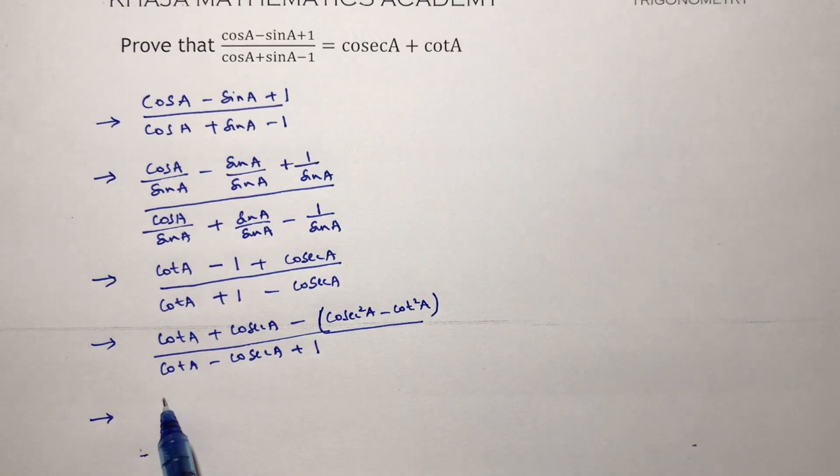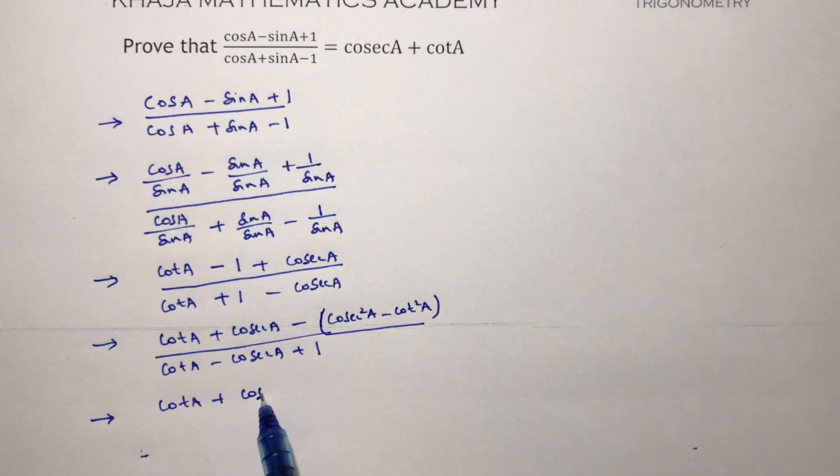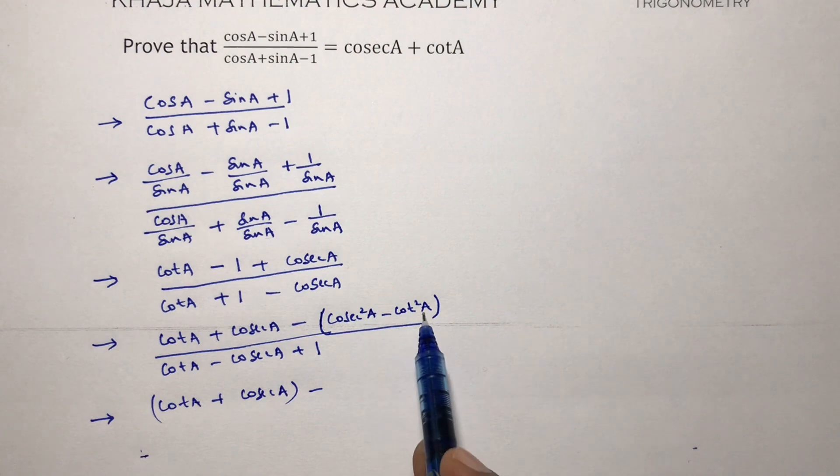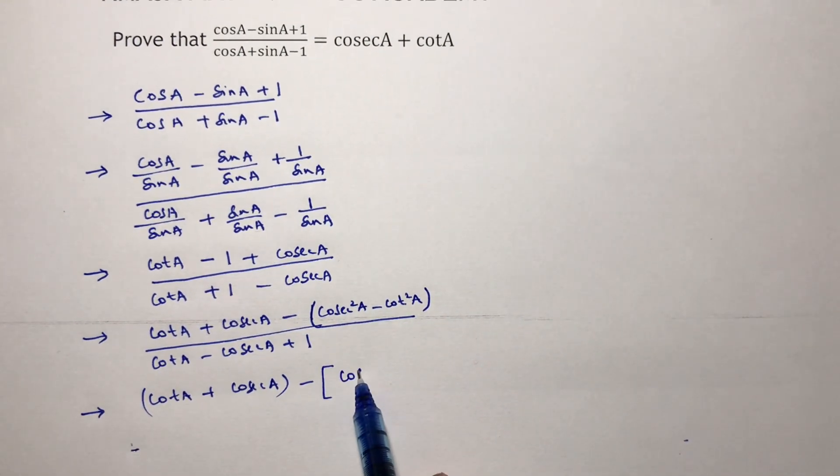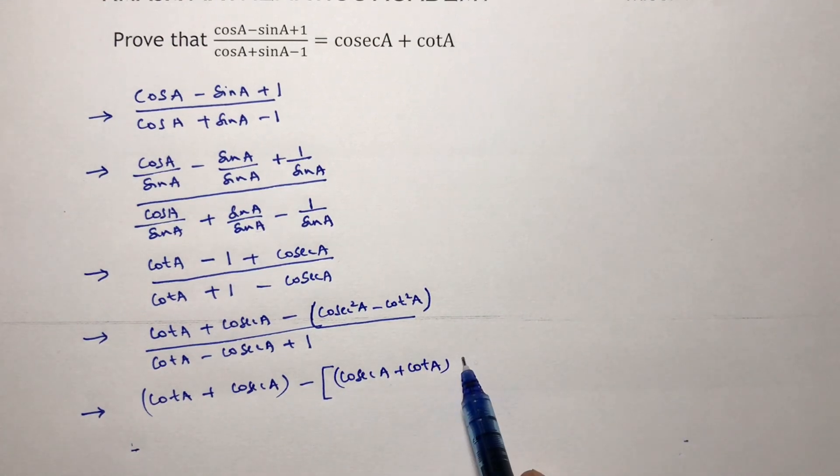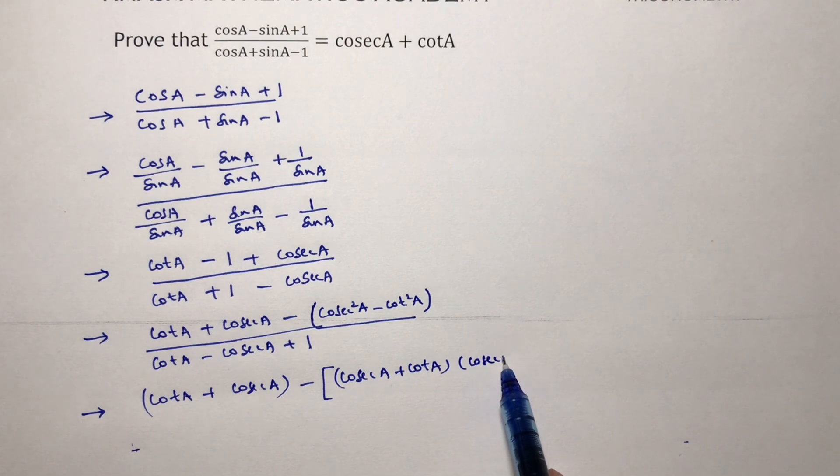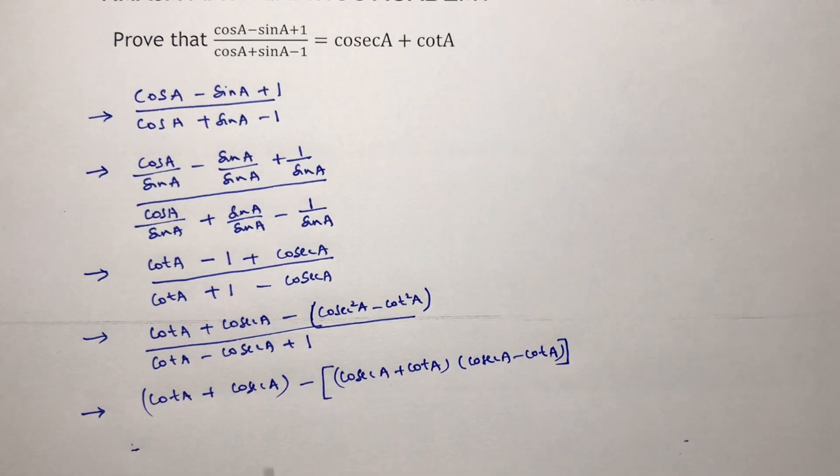So you can write as a + b, that is cosec A + cot A, into cosec A - cot A, divided by cot A - cosec A + 1. Don't change the denominator, write as it is.